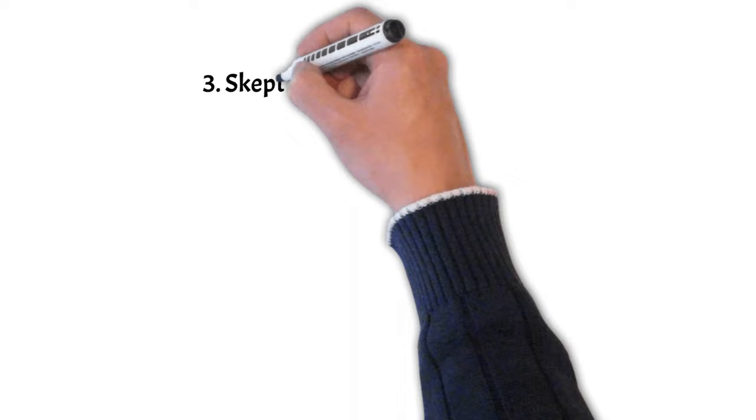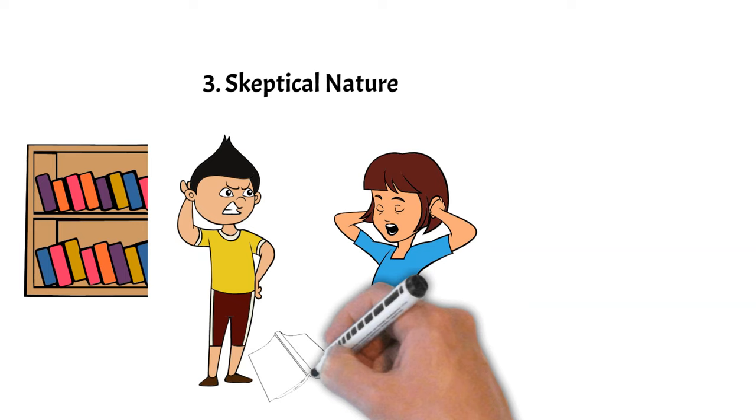Number 3: Their Skeptical Nature. While being cautious is often a good thing, their natural skepticism may make them slow to trust others, which can be frustrating for people trying to build a relationship with them.